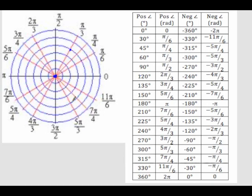Negative 1π/3, negative 2π/3, negative 3π/3, negative 4π/3, negative 5π/3. So I hope that makes sense.